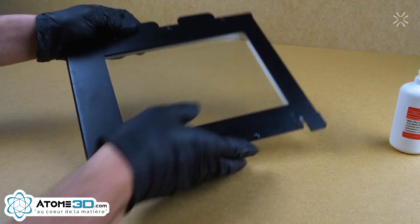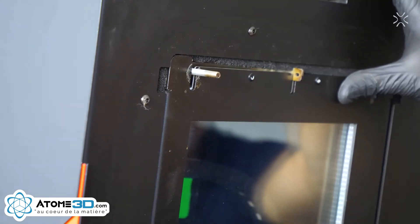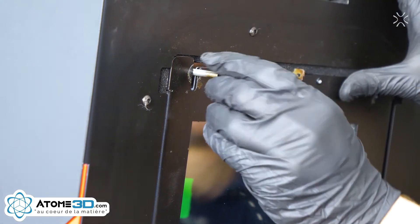There should be no fingerprints or smudges on the glass. Put the laser protective glass back on its place. Assemble the laser protective glass with both nuts.